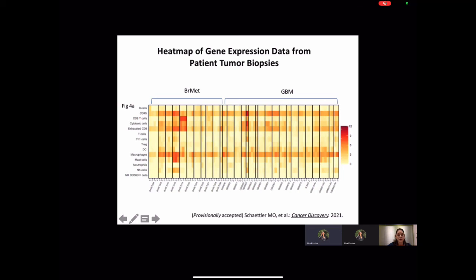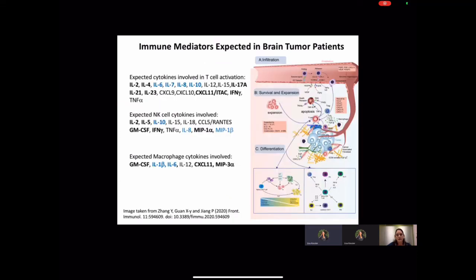Based on these signatures, we hypothesized that Th1, Th2, and Th17 cytokines and chemokines would be found in the blood of glioblastoma and brain metastasis patients compared to healthy persons, and that this would reflect that T cell activation and the NK cell recruitment and the macrophage recruitment as we would expect based on our tumors.